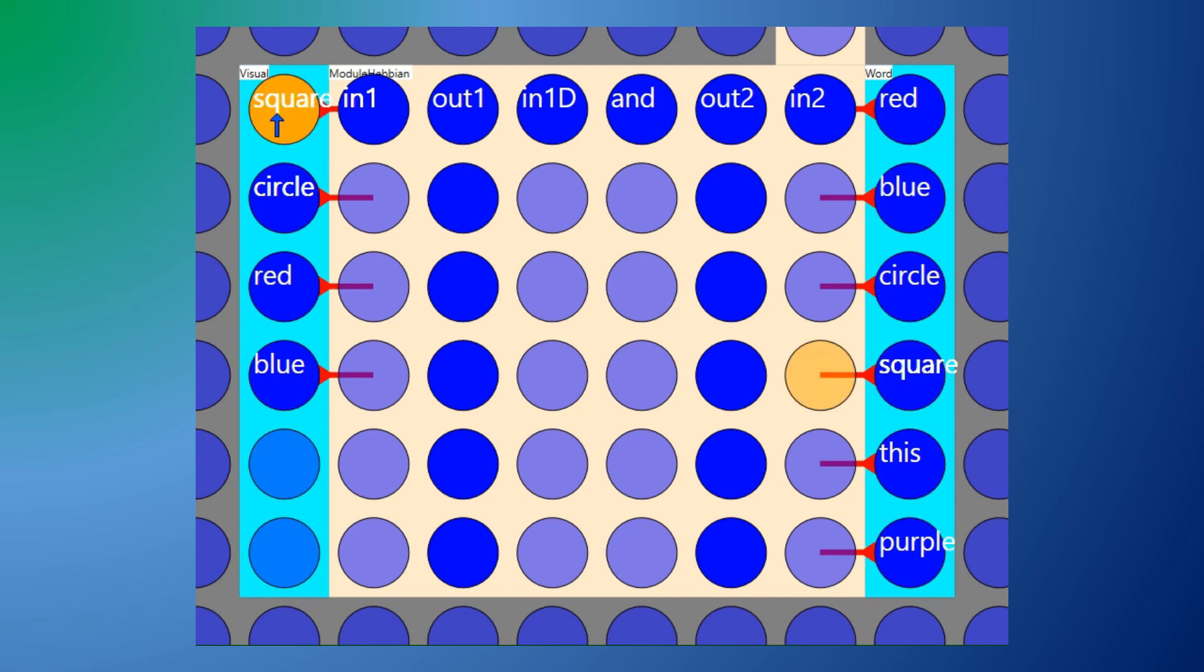Now synaptic connections are created between the firing neurons and after just a single instance of concurrent firing the two inputs are associated.